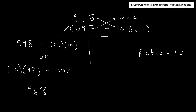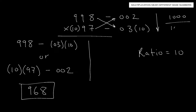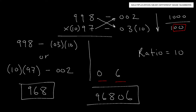Our left-hand side is 968. For the right-hand side, multiply the two deficiencies: 2 times 3 gives 6. Since the smaller base (100) has 2 zeros, we need 2 digits on the right-hand side, so we write 06. Our final answer is 96,806.